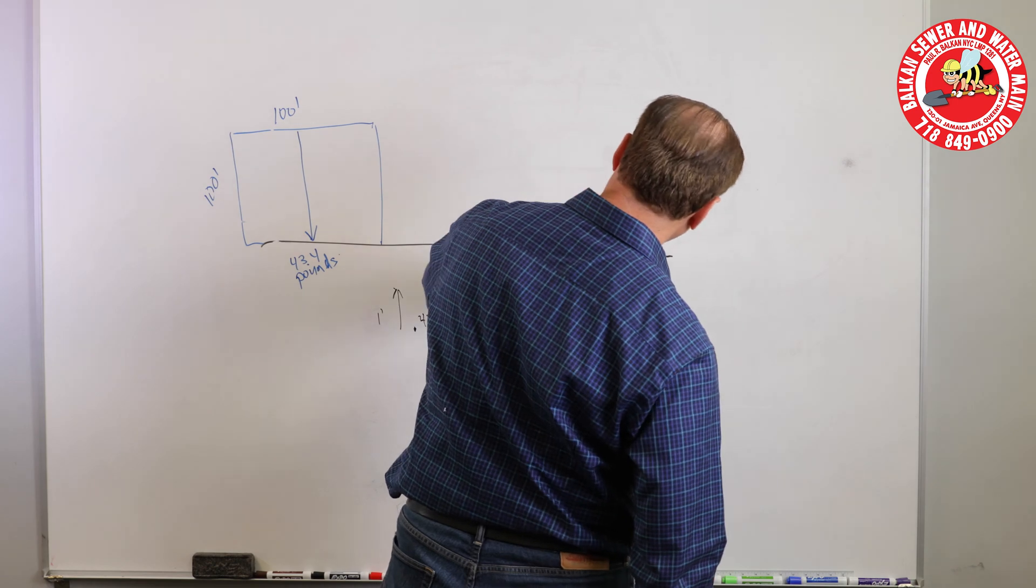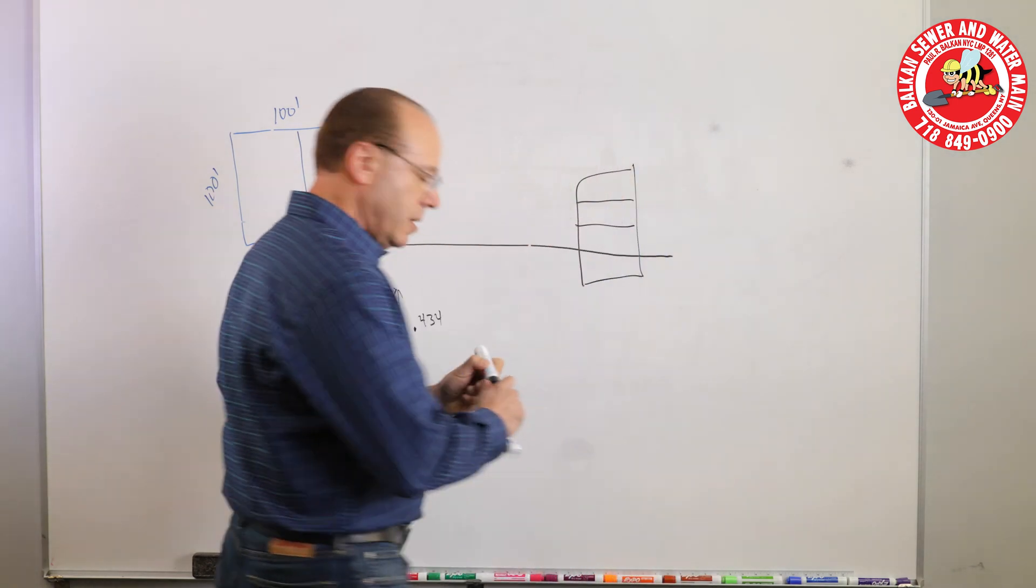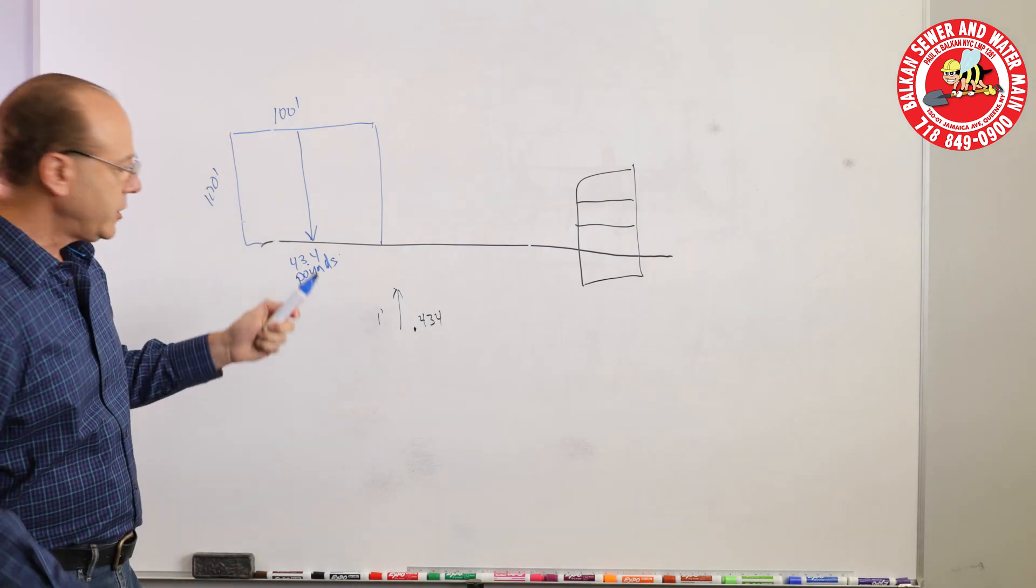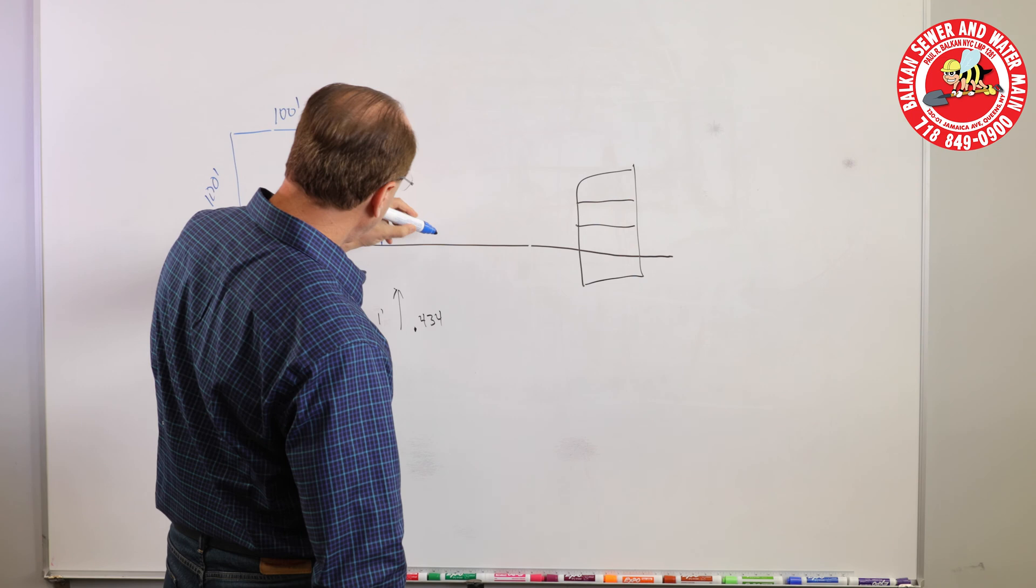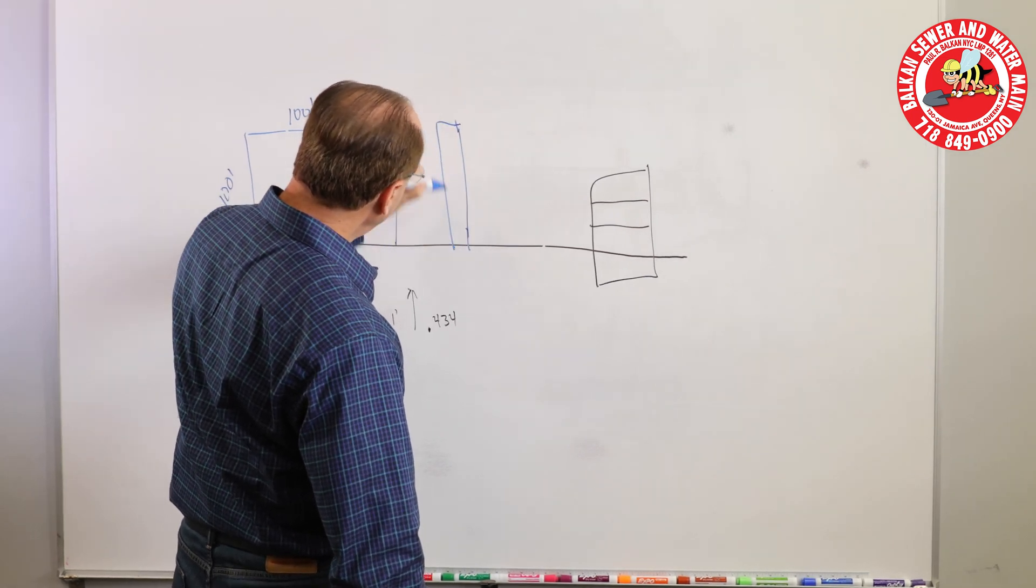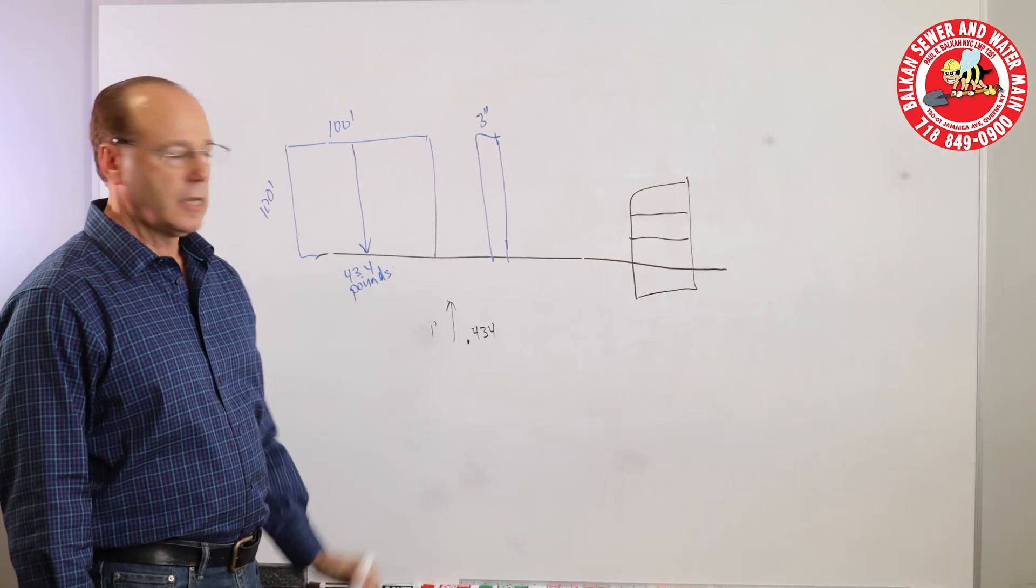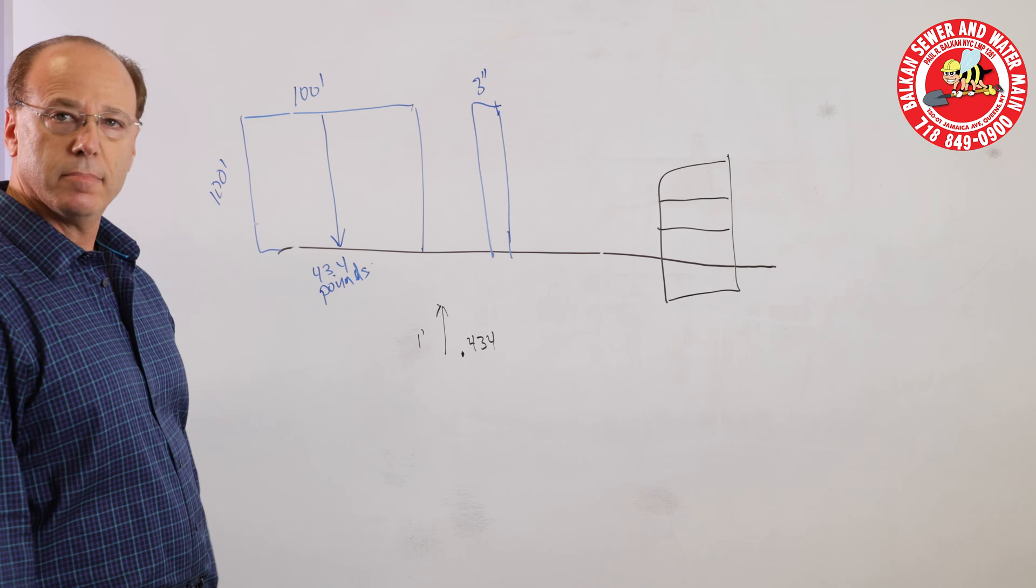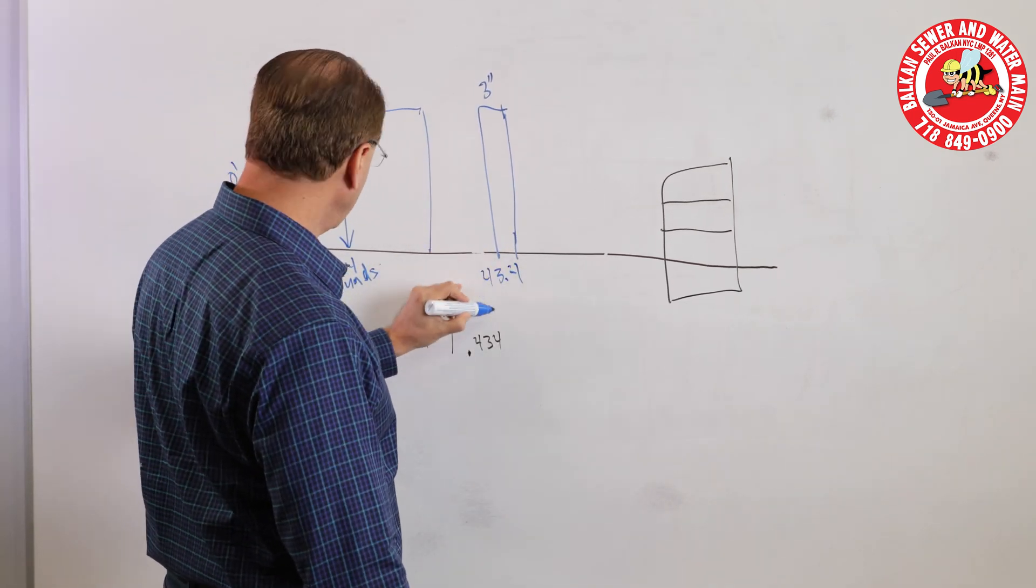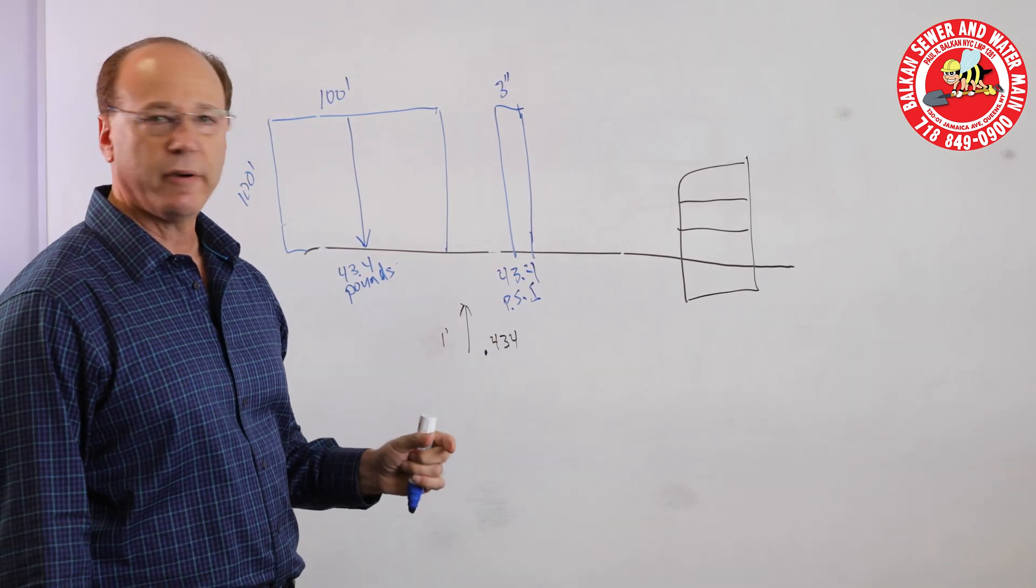So say this is your house. You have a basement and you have three floors. Now the interesting thing is if you have the same column of water and instead of a hundred feet wide it could be three inches wide. The calculation is the same. You still have 43.4 PSI pounds per square inch because it's pounds per square inch. The actual volume does not come into play.